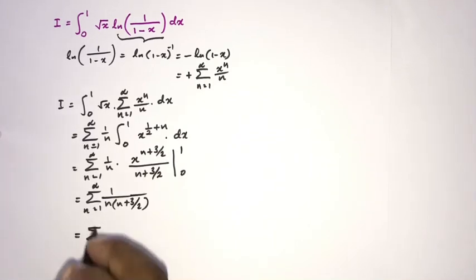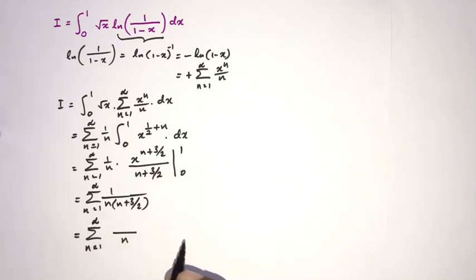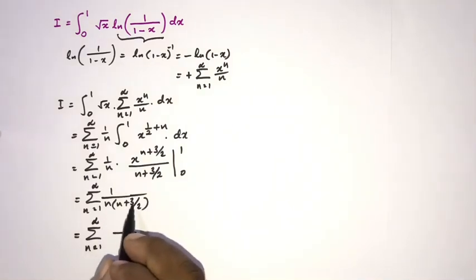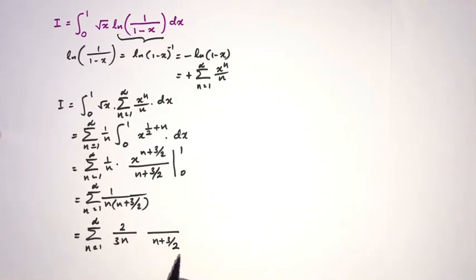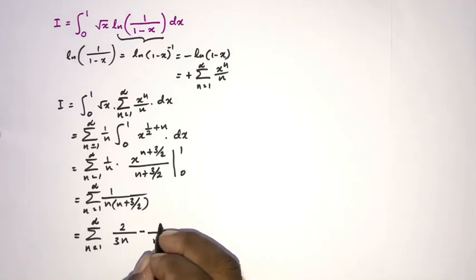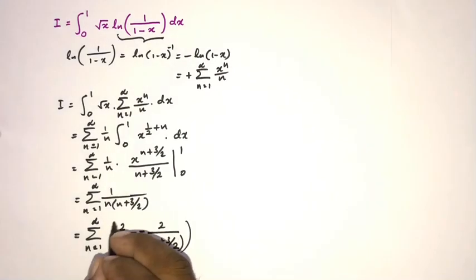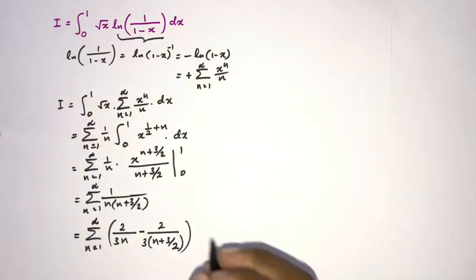This equals the sum from n equals 1 to infinity of 1 over n(n plus three halves). Now I apply partial fractions using the cover-up method. Plugging in 0 we get two thirds, and plugging in minus three halves gives minus two thirds. So we can write this as two thirds times the sum of 1 over n minus 1 over (n plus three halves).